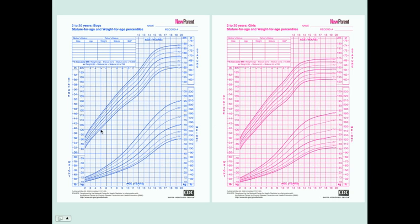Here's the growth chart for boys and girls. Whether or not somebody is overweight or obese in children is based on percentiles. Any boy or girl between the 85th and 95th percentile is considered overweight, and any boy or girl above the 95th percentile is considered obese.